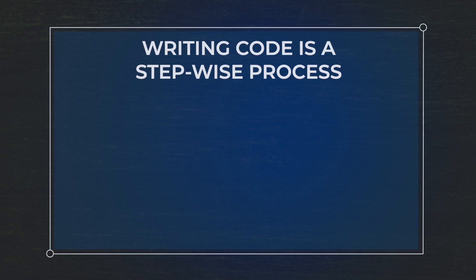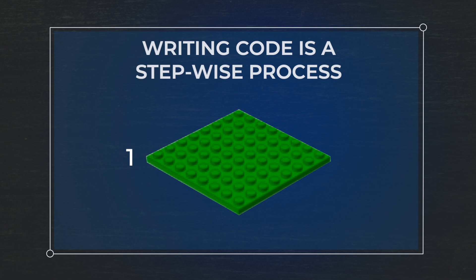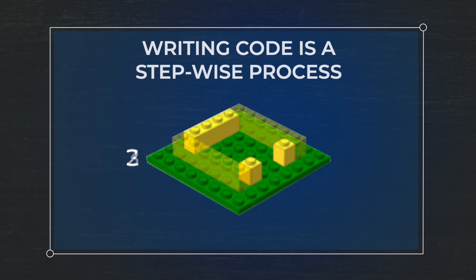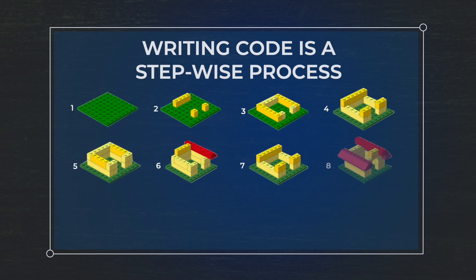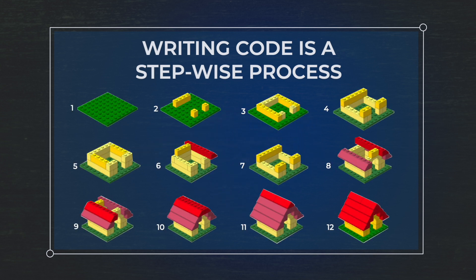Data science is much more about stepwise processes where we are going to have step one: first build the foundation. Step two, we are going to then put in some corner pieces. Three, build some walls and so on — step by step moving through this process in order to then get to this final reproducible report.